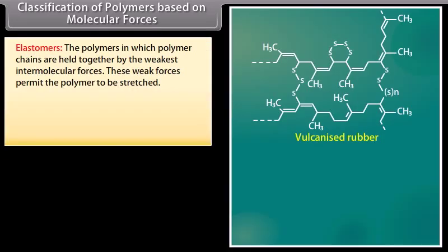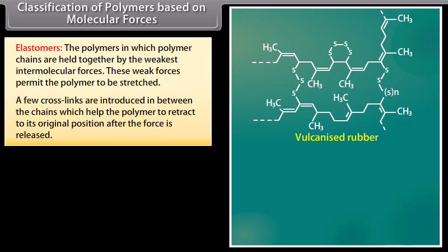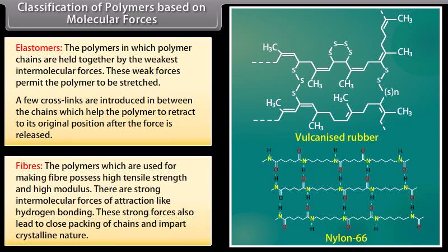Classification of polymers based on molecular forces has four subcategories. Elastomers are polymers in which chains are held together by the weakest intermolecular forces; these weak forces permit the polymer to be stretched, and a few crosslinks help the polymer retract to its original position after the force is released — for example, vulcanized rubber. Fibers possess high tensile strength and high modulus with strong intermolecular forces like hydrogen bonding, leading to close packing of chains and crystalline nature — for example, Nylon-66.